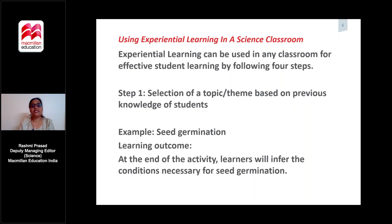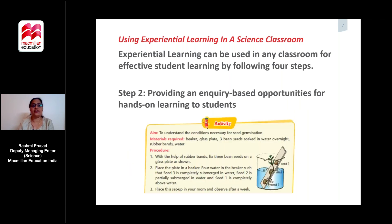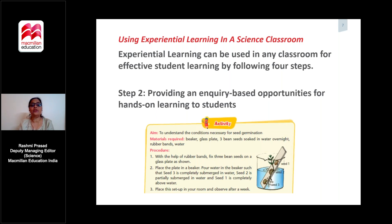The next step is to provide the hands-on experience. The students will perform the experiment. A simple three-bean experiment is being done, in which the materials required are listed out. These materials are readily available and the procedure to do the experiment is clearly explained in simple language so the students can read, understand, and carry out the experiment.